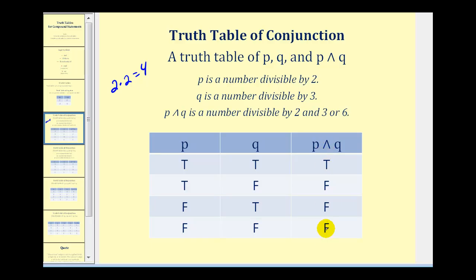To complete the conjunction column, recall that 'and' means both P and Q must be true. Otherwise, P AND Q is false. So the only true entry in this column occurs when both P and Q are true — everything else is false.